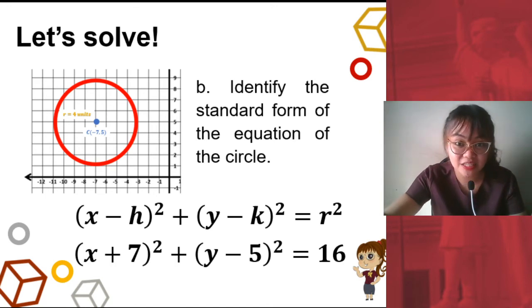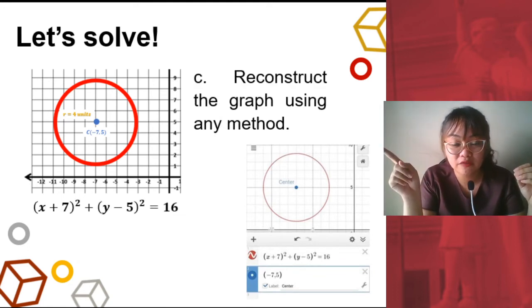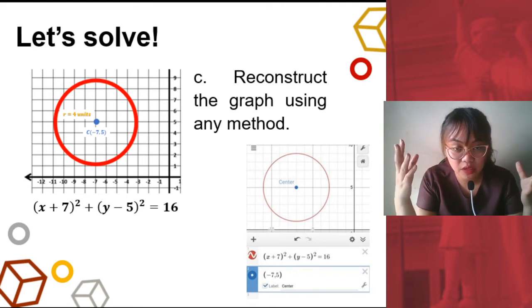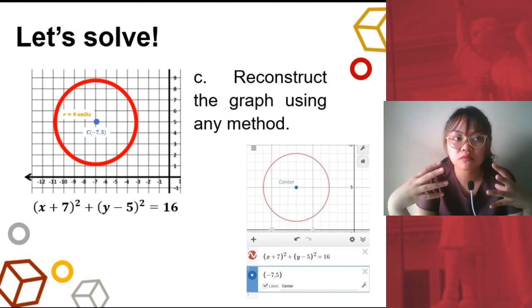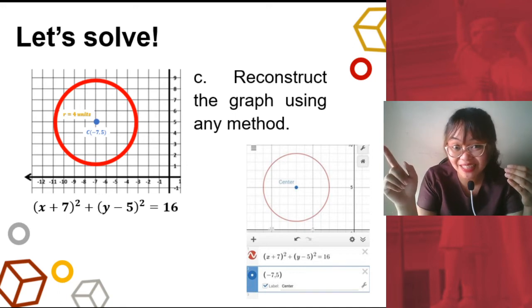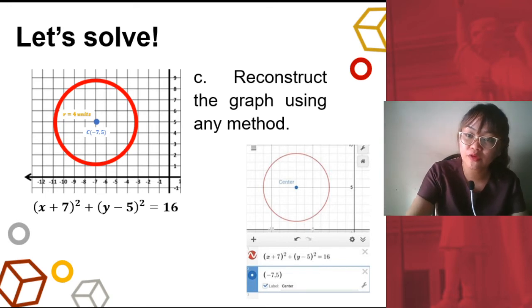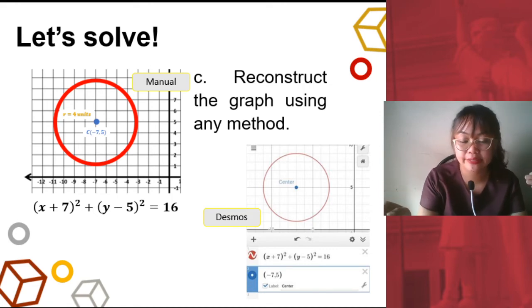Next, let's proceed to Letter C — reconstruct the graph using any method. What we did earlier in extracting the circle is already the manual method. You also already know how to use your Desmos app — you just type in the equation, then label the center. The label is important. From this, we've already answered the three questions from the problem: the manual method and the Desmos method.